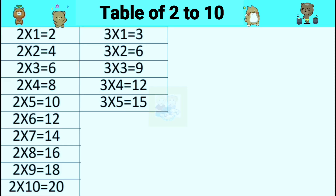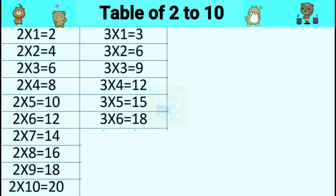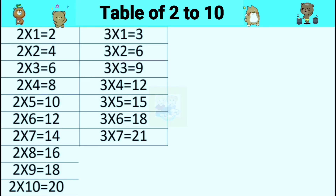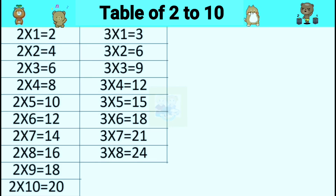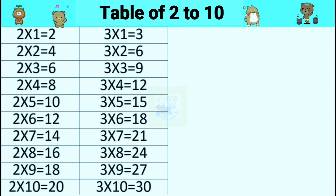Three fives are fifteen. Three sixes are eighteen. Three sevens are twenty-one. Three eights are twenty-four. Three nines are twenty-seven. Three tens are thirty.